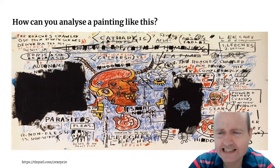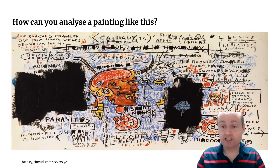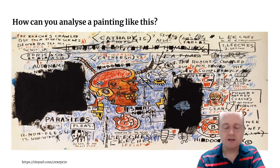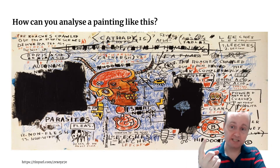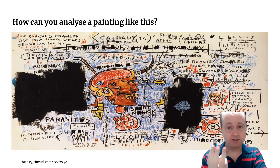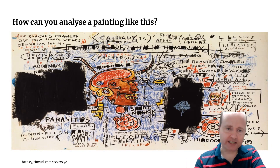It might be quite difficult to start speaking about a painting like this. What we're going to look at today is a very general framework for understanding different acts of communication — including anything that human beings make: a painting, a novel, a YouTube video. Anything a person made can be analyzed using social semiotics and multimodality.